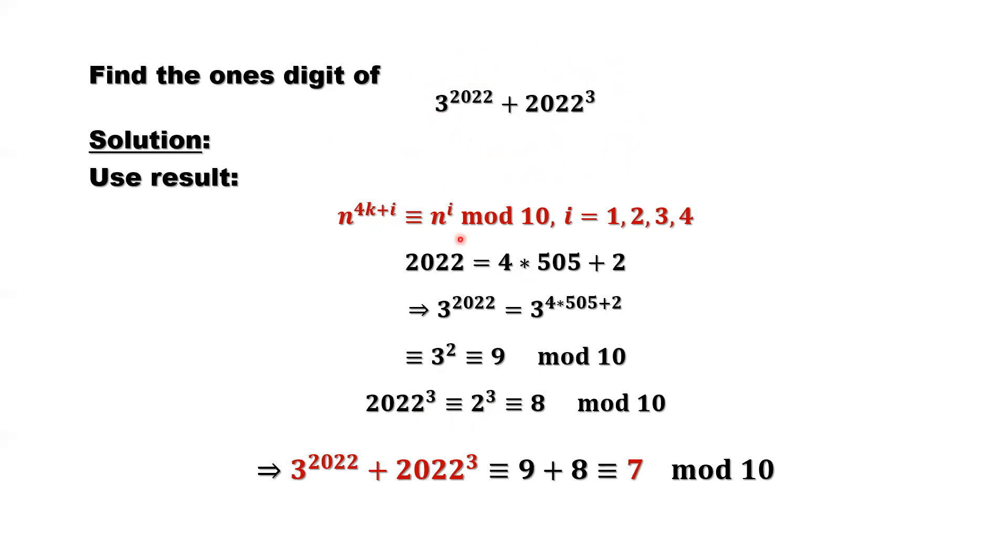So for the whole thing, we need to combine both results. The remainder, the one's digit for the first one is 9, the second one is 8. Add them together up to 17. 17, last digit, the one's digit, that's 7. So 7 is the final result.